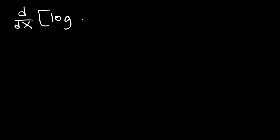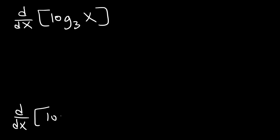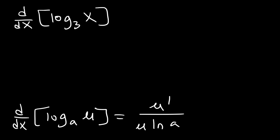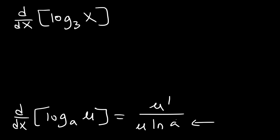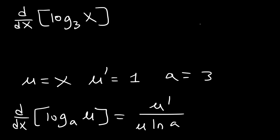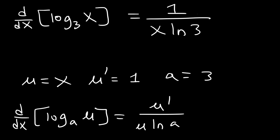Now let's go over the derivative of regular logarithmic functions. What is the derivative of log base 3 of x? The formula is: the derivative of log base a of u is equal to u prime divided by u times ln a. For the natural log, which has base e, this becomes u prime over u times ln e, and since ln e equals 1, it simplifies to u prime over u. For any other base, you keep the ln a. So here, u is x, u prime is 1, and a is 3, giving the answer 1 over x ln 3.